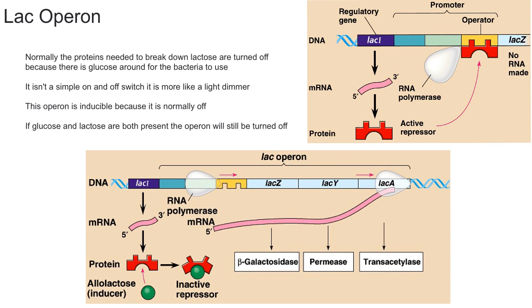The reason you need essentially no glucose for transcription to actually occur is that when glucose is low, the bacteria is essentially starved. This increases the levels of cyclic AMP, which is a signaling molecule. Then you have a protein called the cyclic AMP receptor protein (CAP). When this CAP binds to cyclic AMP — which is produced when glucose is low — it binds to the lac promoter, shown as this region over here, and turns on transcription.